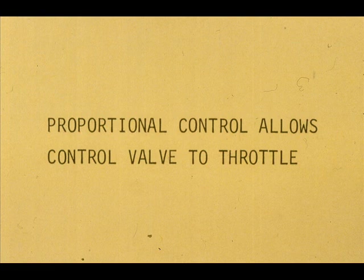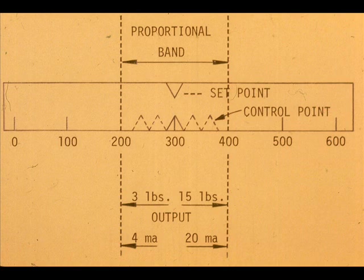The proportional controller allows the controller output and valve to assume a throttle position somewhere between maximum and minimum. However, it is necessary for the control point to be within the proportional band; otherwise, the output would be at one of the extremes.